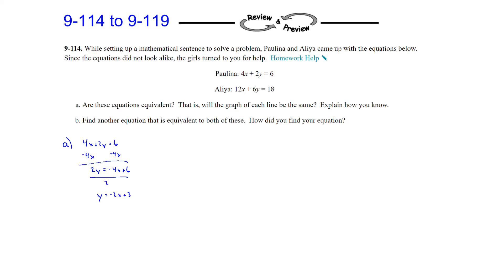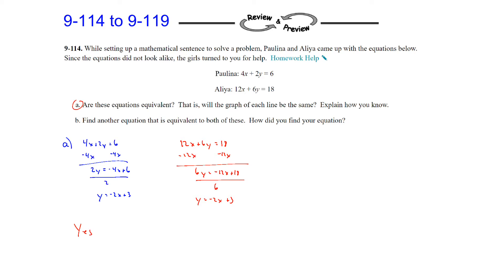For Aaliyah's equation, we have 12x plus 6y equals 18. Subtract 12x to get 6y equals negative 12x plus 18, then divide everything by 6. Negative 12 divided by 6 is negative 2x, and 18 divided by 6 is 3. So both equations are exactly the same — they are equivalent, the graph of each line will be the same. We wrote them in slope-intercept form and the equations were equivalent.